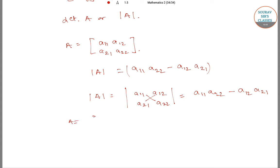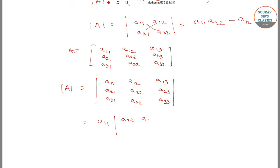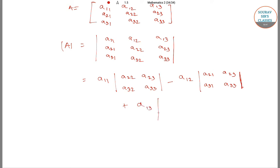For a higher order square matrix, the determinant is expanded along the first row. It equals a11 into the minor of the submatrix [a22, a23; a32, a33], minus a12 into its corresponding minor, plus a13 into the minor of [a21, a22; a31, a32]. This is the determinant of A.